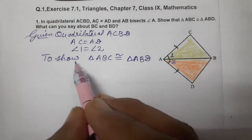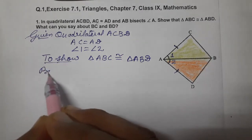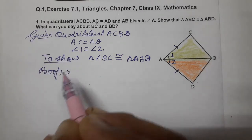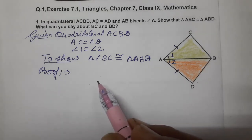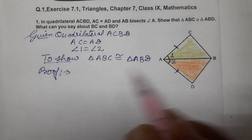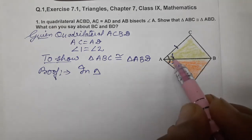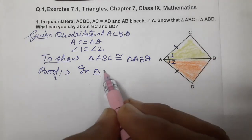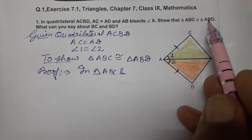To prove this, we have studied the SAS axiom and ASA theorem (angle-side-angle). Let's prove it by SAS axiom only. Consider triangles ABC and ABD.